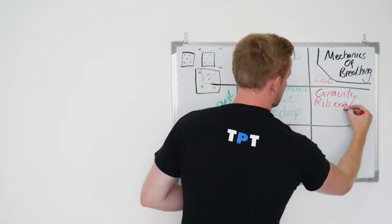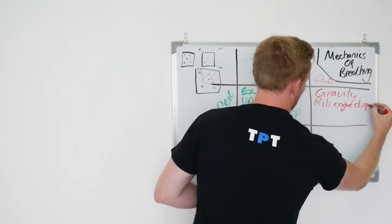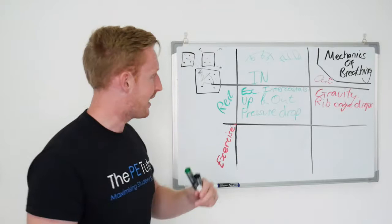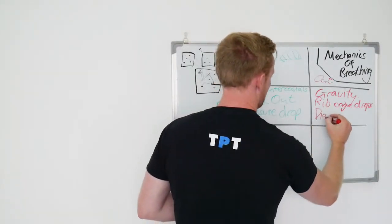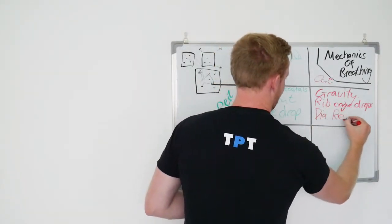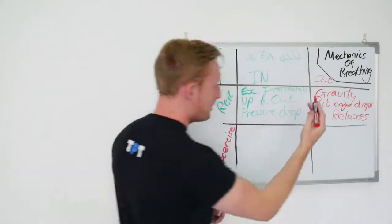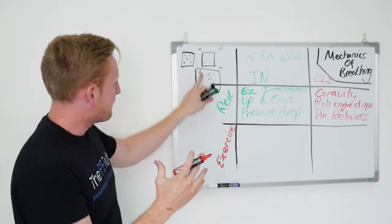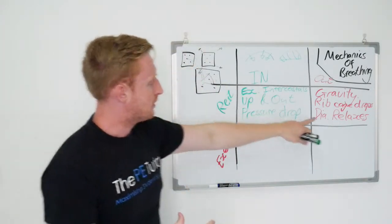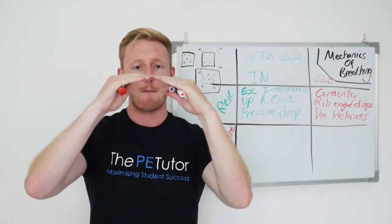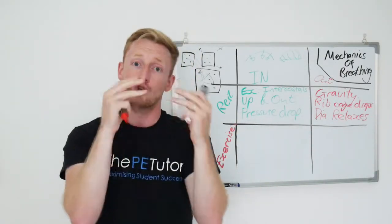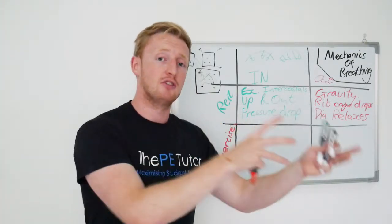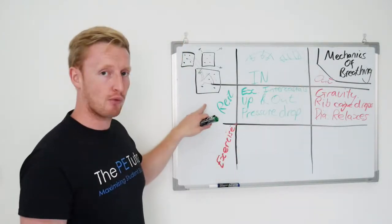Rib cage drops, and the diaphragm, which flattened for us, now just returns to its relaxed state. The diaphragm relaxes. The rib cage drops, pressing on the lungs, decreasing the space, forcing air out. The diaphragm relaxes, it goes from that flat position back to its domed position, reducing the space, increasing the pressure. Air moves from area of high pressure to low pressure. And that's how we breathe at rest.